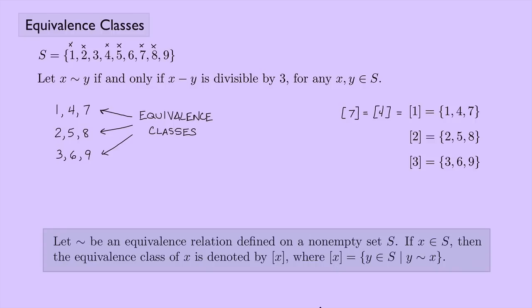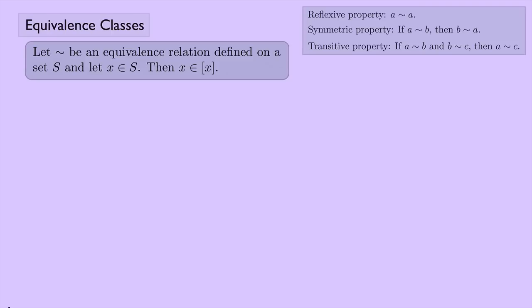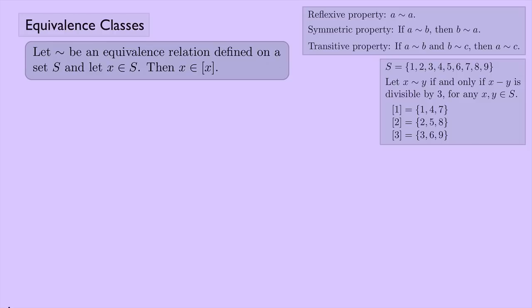Using equivalence classes, we can prove a few properties. First example: let tilde be an equivalence relation on S, and let x be an element of S. We want to show that x belongs to its own equivalence class [x]. By the reflexive property, x is equivalent to x, which means x belongs to [x]. That was an easy one — let's do a harder one.